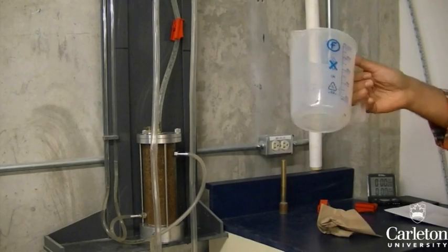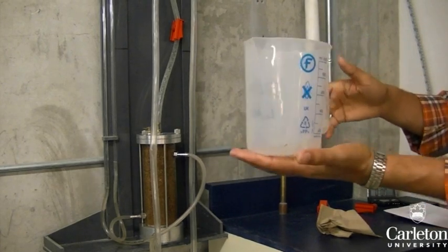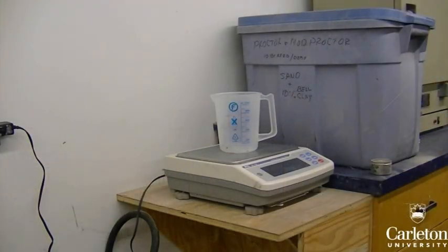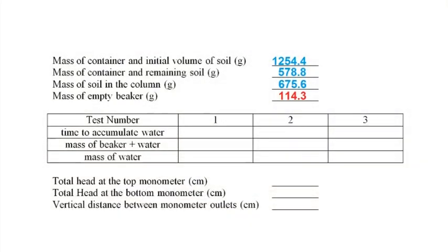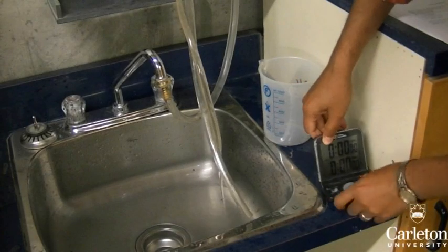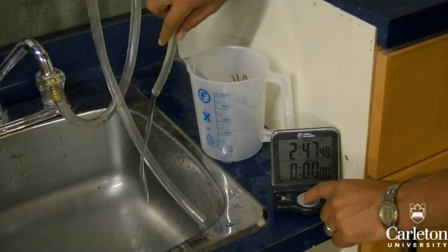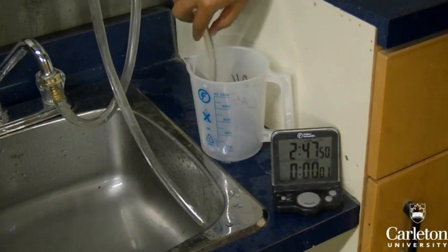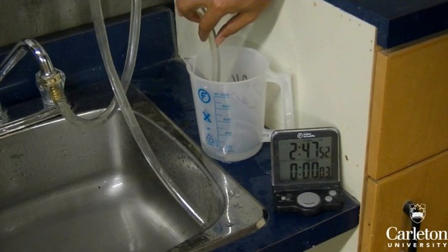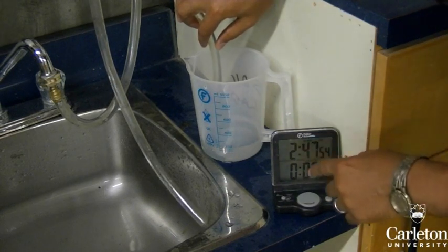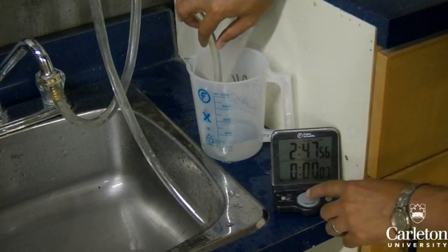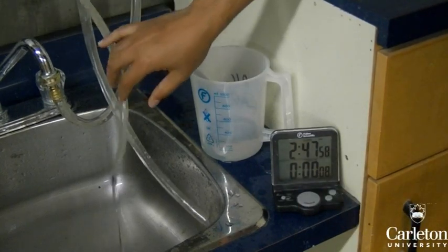Take a beaker, then measure and record its mass in the table. We'll be using this stopwatch to record the time. Simultaneously start the stopwatch and begin filling the beaker with the discharge from the test cylinder. Here we are aiming to collect about 300 milliliters of water. Simultaneously stop the stopwatch and remove the discharge.